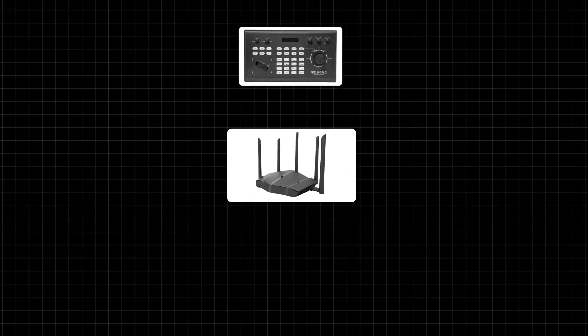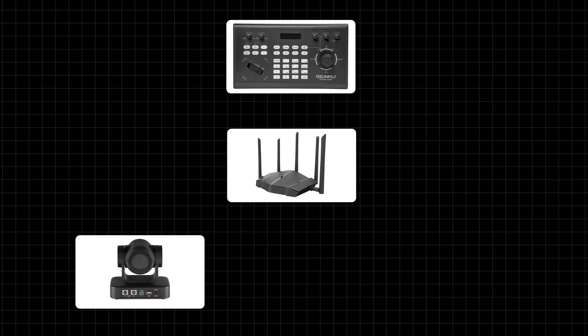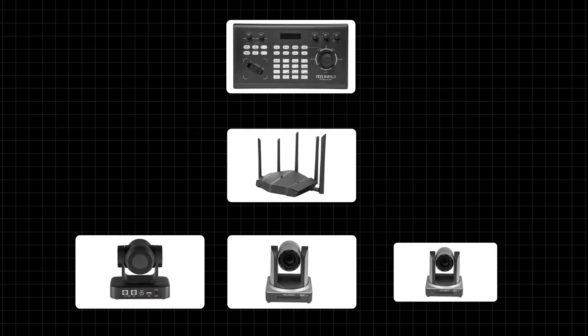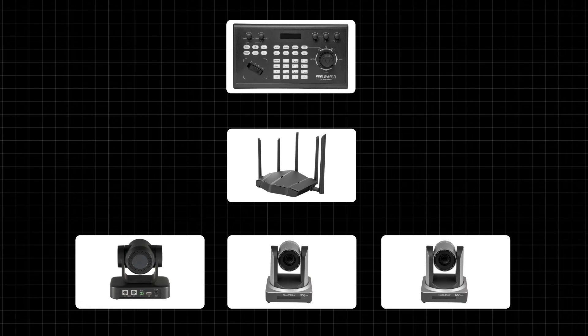Make sure the KB-C10 controller is on the same LAN as your PTZ camera, and the IP address must be in the same segment. Connect all devices into the same router via the LAN port, then power on.